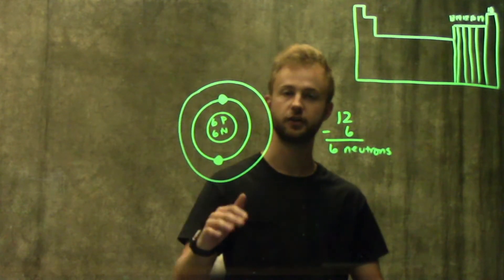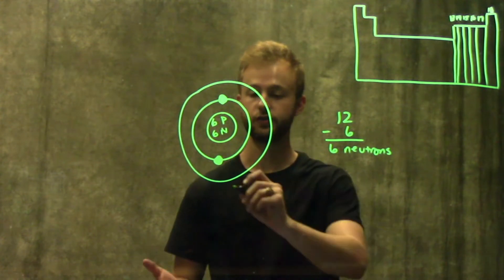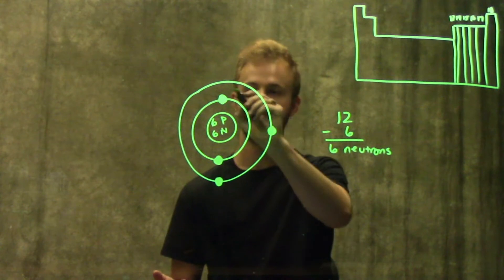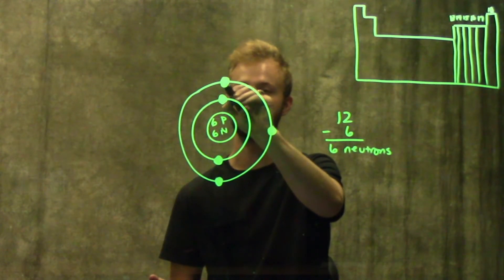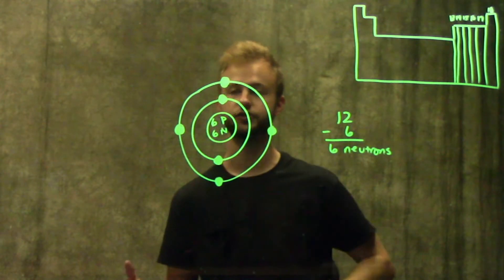This last shell has four electron orbitals, and each one can hold two. We have four electrons left, so that means we've only filled up two of the four orbitals in this shell.